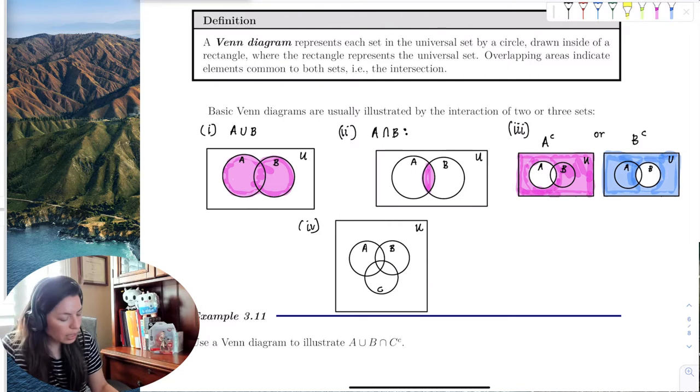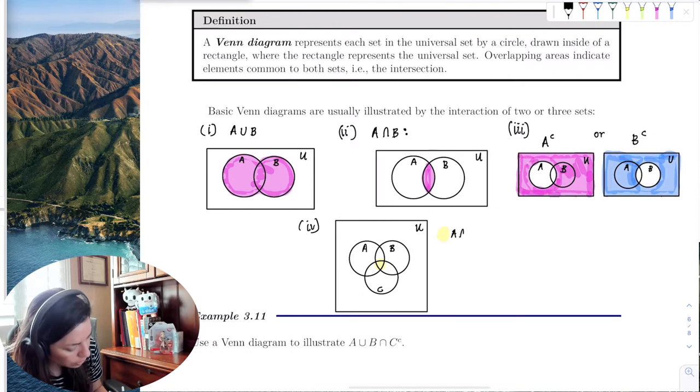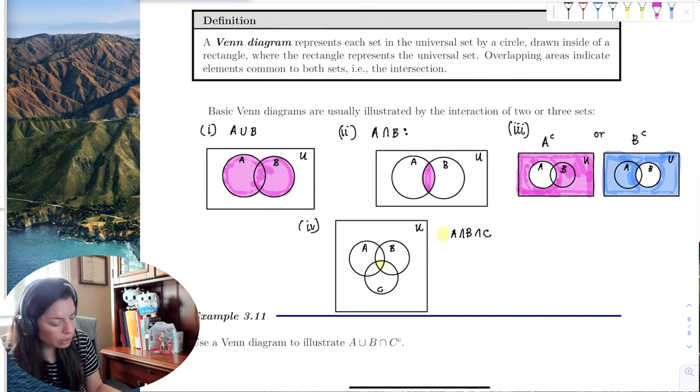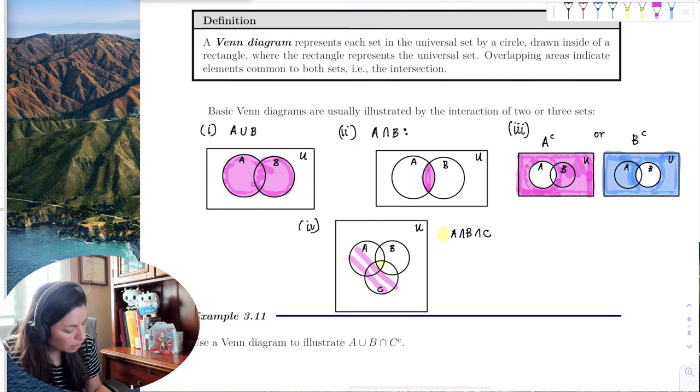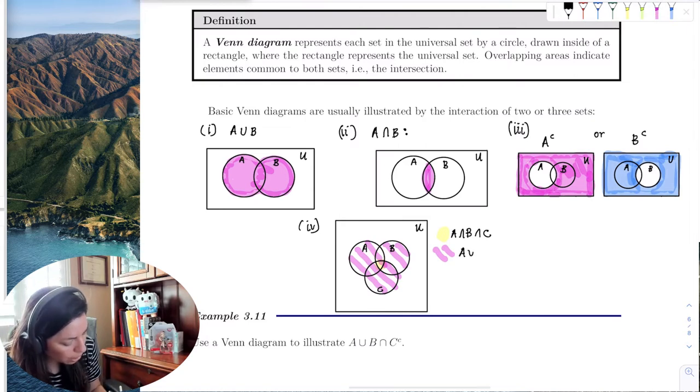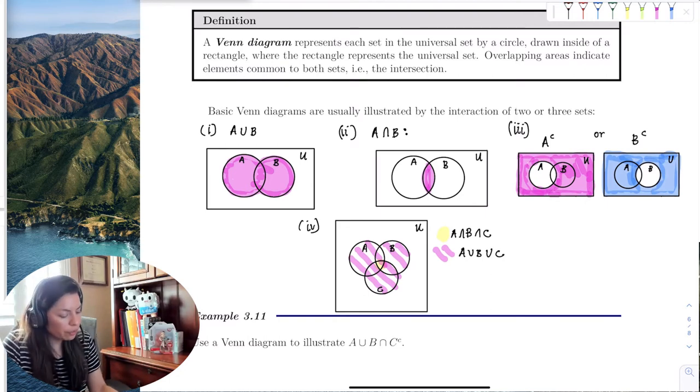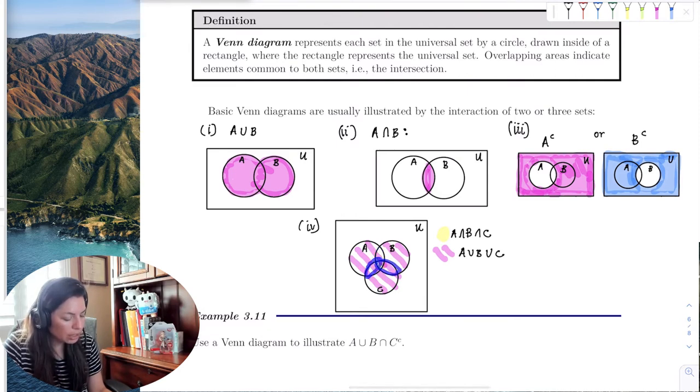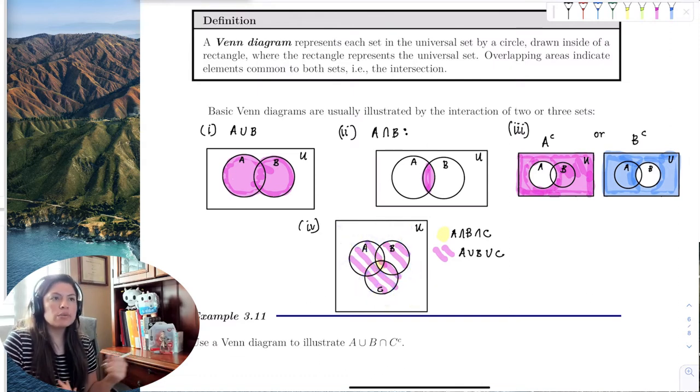So technically the intersection of all three is right there. That's A intersection B intersection C. And the union would be A union B union C. And then you can have any sort of combinations. If you want A intersection B, that's this piece here. B intersection C. A intersection C. If you want the complement of B, that would be everything not in B like that. So it all still works, it's just how to draw it.